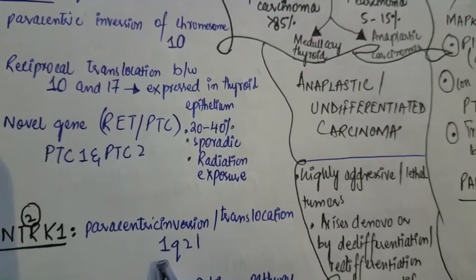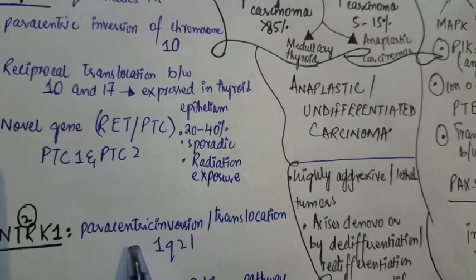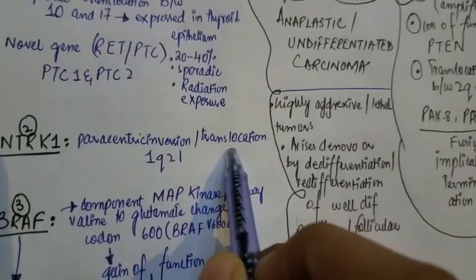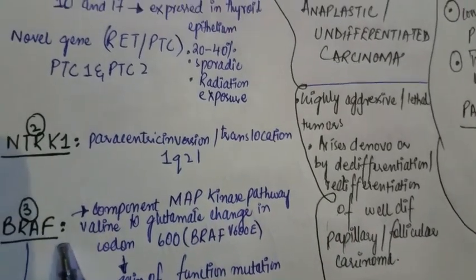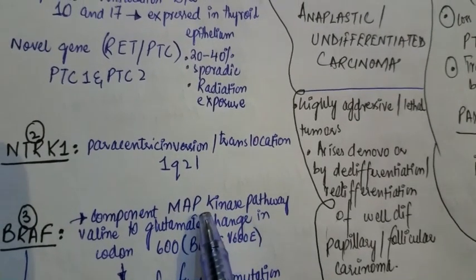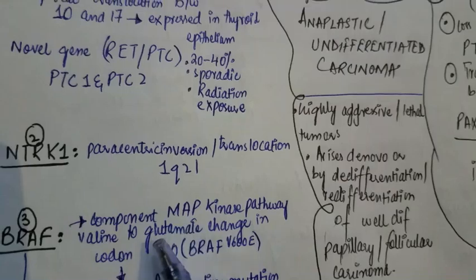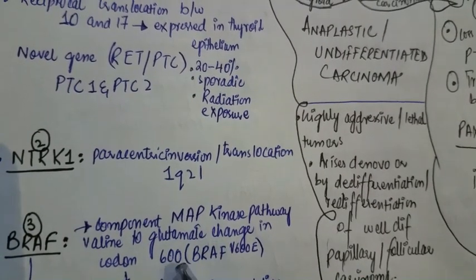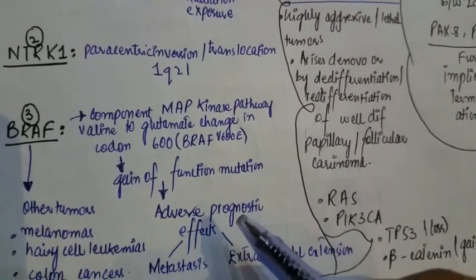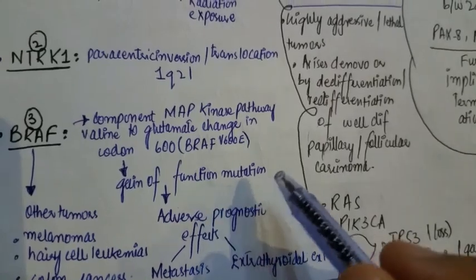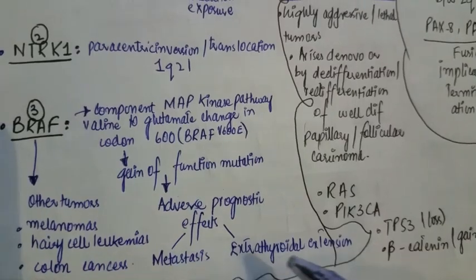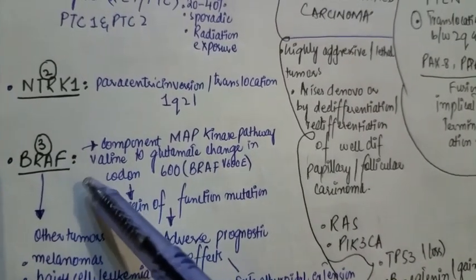Another gene involved is NTRK1, present on chromosome 1, where paracentric inversion and translocation lead to gain of function. The BRAF gene is also involved as a component of the MAP kinase pathway, in which valine is replaced by glutamate at codon 600, resulting in a gain of function. This BRAF gain-of-function mutation results in adverse prognostic effects, including metastasis and extrathyroidal extension.